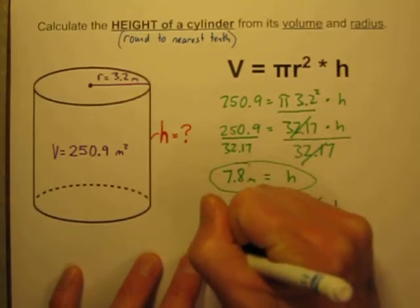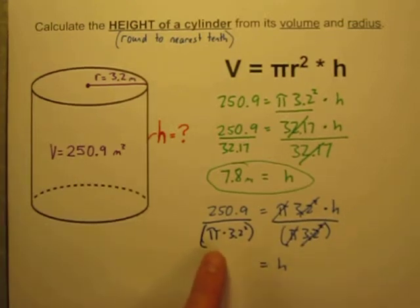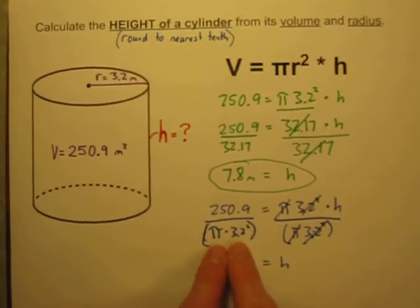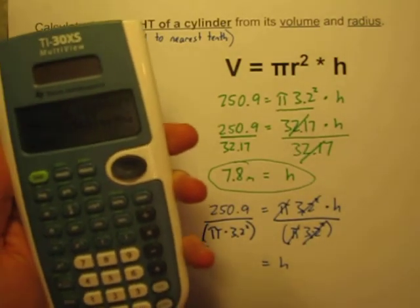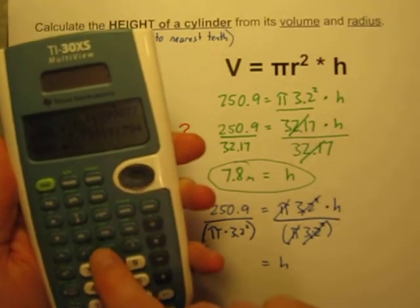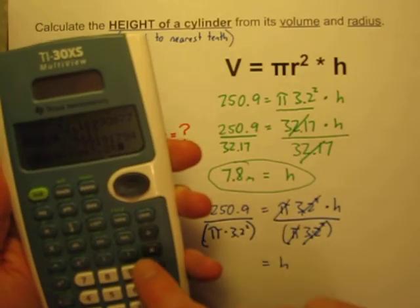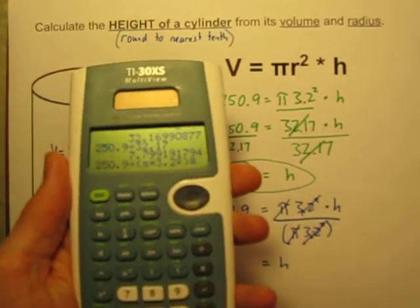But now let's divide this side by pi times 3.2 squared. You have to be careful though. Let's put that in parentheses. If we put it in parentheses, when we enter that into our calculator, the calculator will know to do that first. Multiply these numbers together first, and then divide it into 250.9. So if I do 250.9 divided by parentheses, pi times 3.2 squared, close those parentheses.